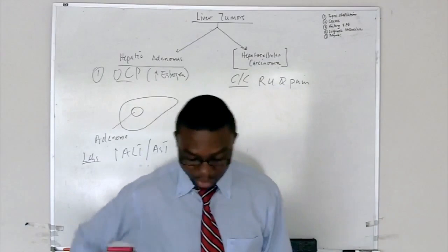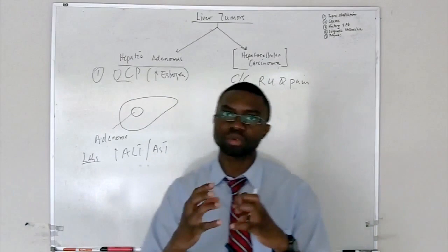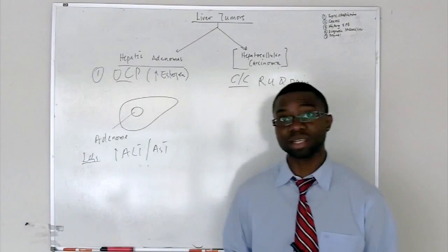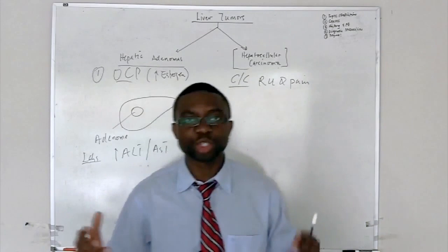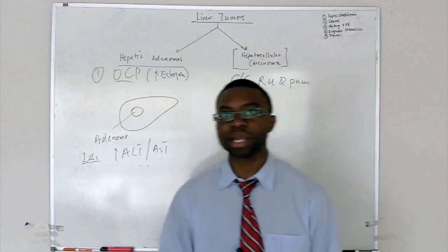The abdomen is going to be distended. Remember, the liver is shrunk now. It's cirrhotic. Now, they've developed a lot of ascites. You have to watch the video on the liver function test to be able to understand this concept, why they've developed a lot of ascites. They've got to be jaundiced. Just classic symptoms of liver cirrhosis. They can't metabolize bilirubin anymore. So, they become jaundiced.